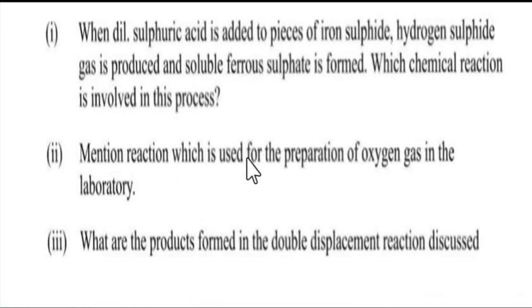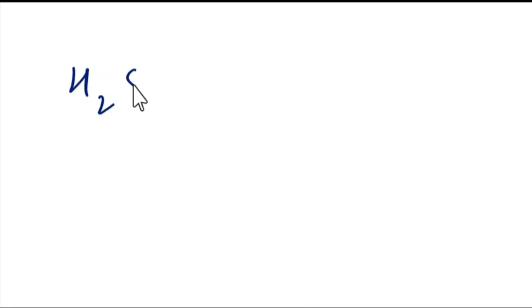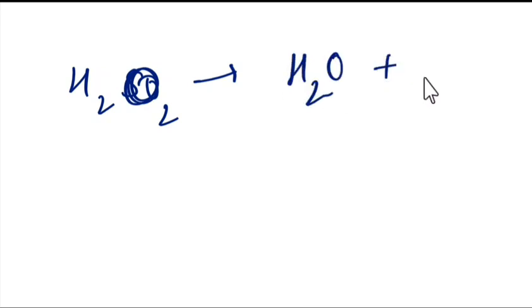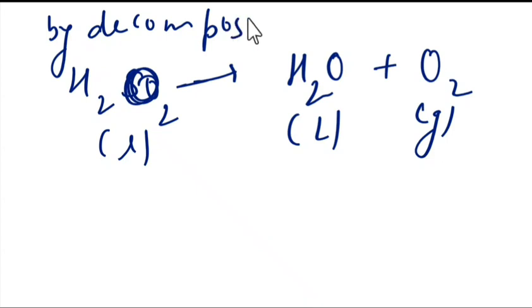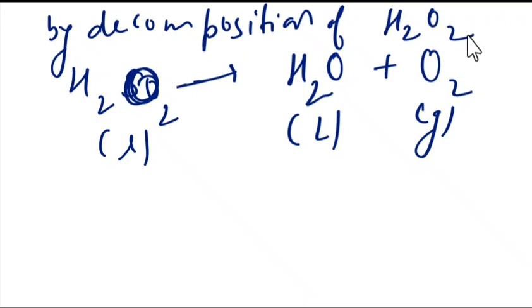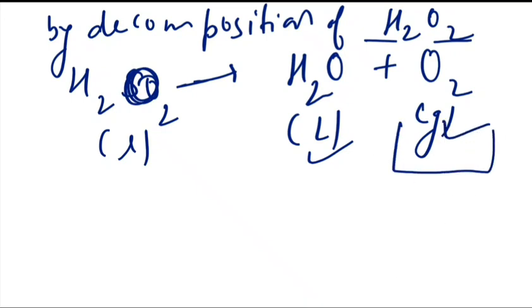Mention the reaction used for the preparation of oxygen gas in the laboratory. For the laboratory preparation of oxygen gas, hydrogen peroxide (H2O2) is used. It decomposes to give water (H2O) in liquid form and oxygen gas. So, oxygen is obtained by the decomposition of hydrogen peroxide H2O2.